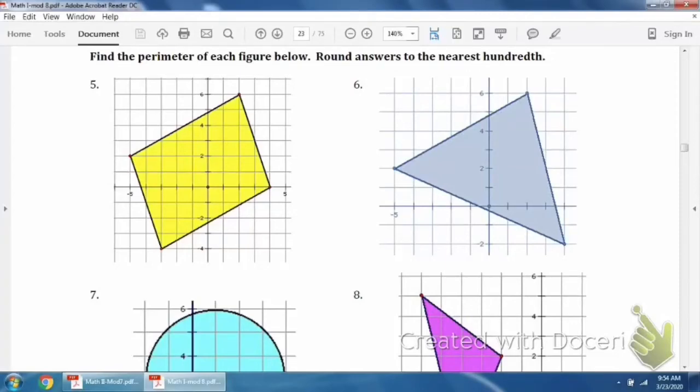Okay, so here we're doing perimeter. Perimeter is basically where you add up all the sides.